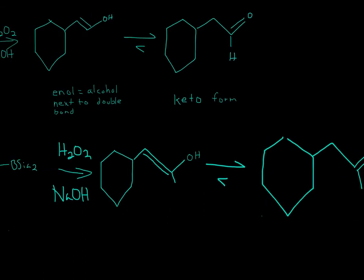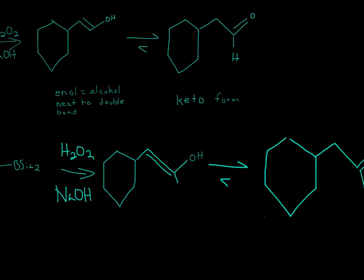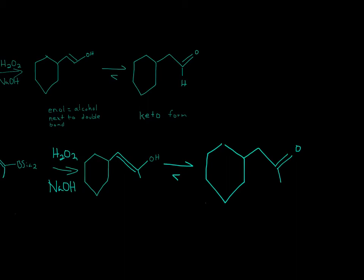And once again, this is the enol form, because it's an alcohol next to a double bond. And then finally, the more stable form is the keto form. And in this case, it is a ketone, because both of these are CH3s.